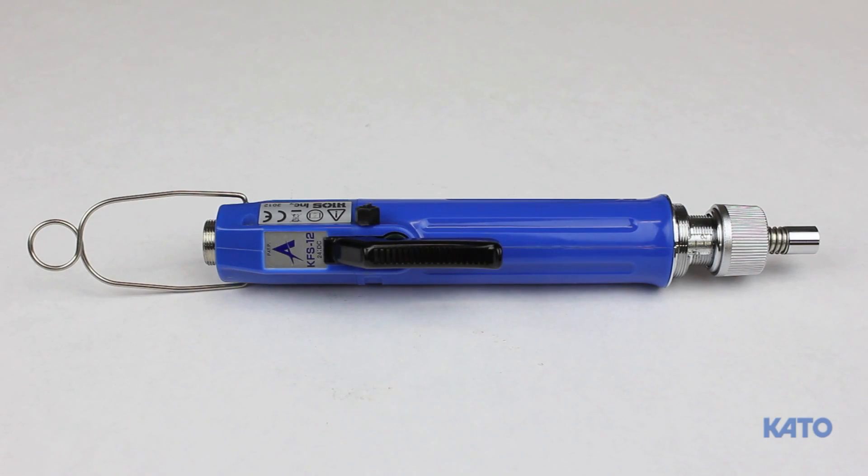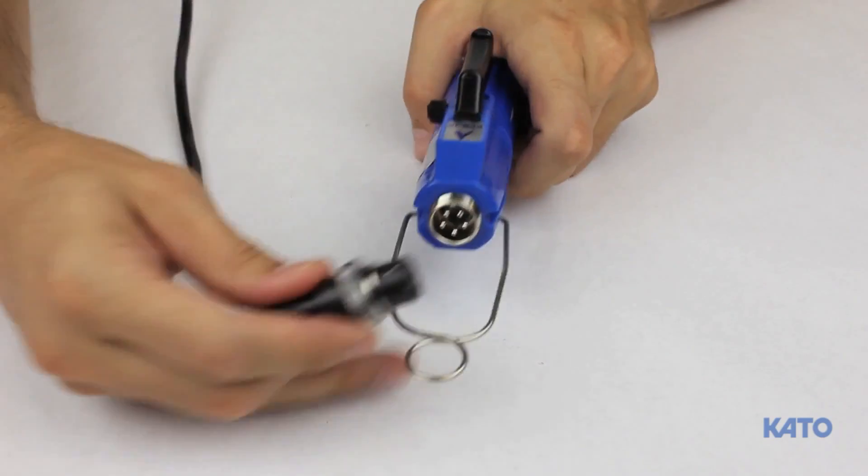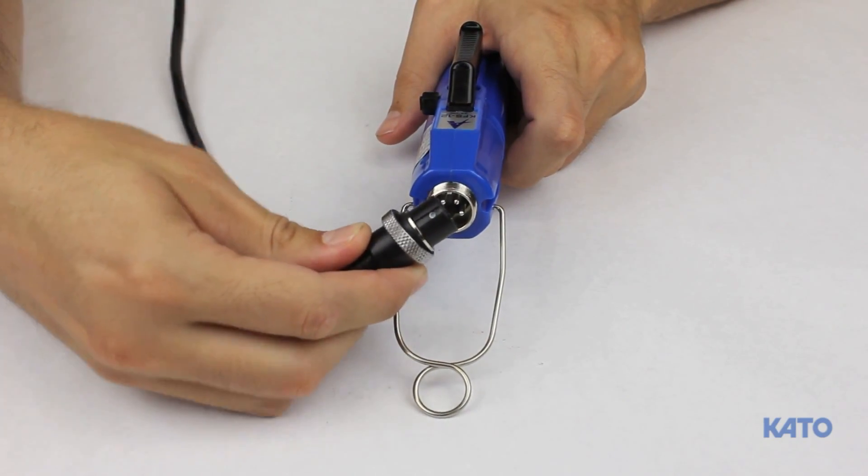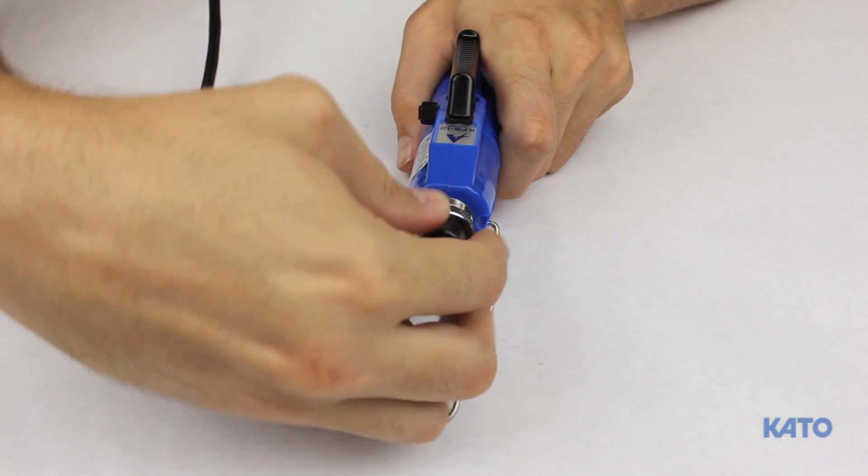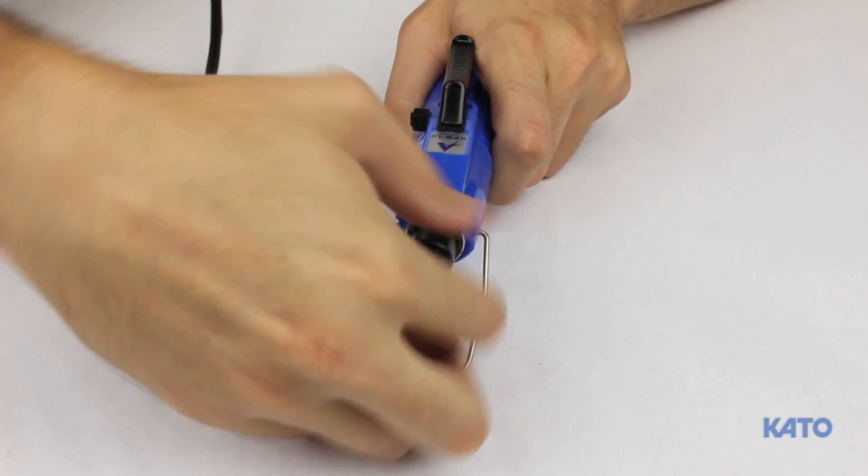The next component is the KFS 12 electric driver. Plug the cable that leads to the transformer in the back. Once again the white dot will indicate proper orientation. Turn the knurled collar to secure the cable.